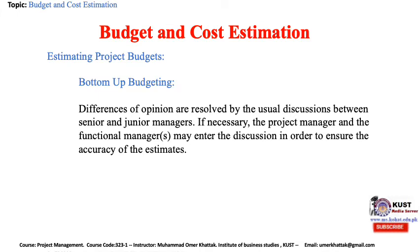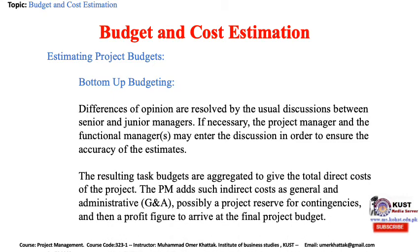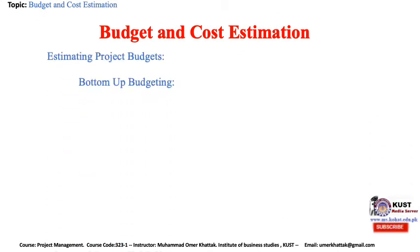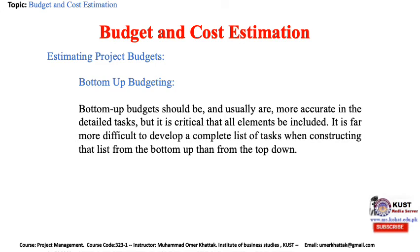Differences of opinion are resolved by discussion between senior and junior managers; if necessary, the project manager and functional manager may enter the discussion to ensure accuracy. The resulting task budgets are aggregated to give the total direct cost of the project. The project manager then adds indirect costs such as general and administrative charges, possibly a project reserve for contingencies, and a profit figure to arrive at the final project budget. Bottom-up budgets are usually more accurate in detail, but it is critical that all elements be included. It is far more difficult to develop a complete task list from the bottom-up than from the top-down.